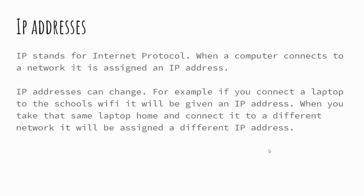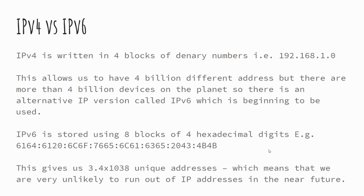One crucial thing about an IP address is that it can change. If you took a laptop or phone and connected it to school Wi-Fi, it would be assigned an IP address, but if you took that same device home and connected to your home network, you'd be assigned a different IP address. There are two standards: IP version 4 and IP version 6, because over time we've reached the limit of how many IPv4 addresses we can have.